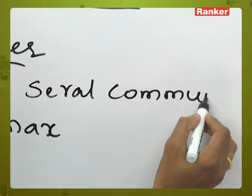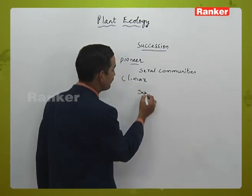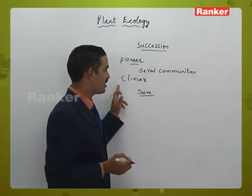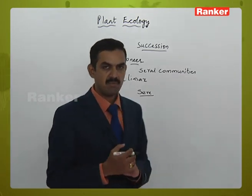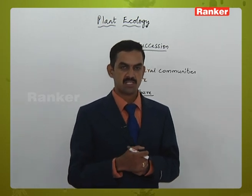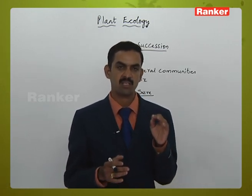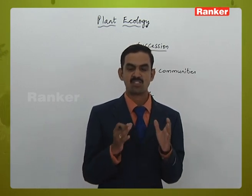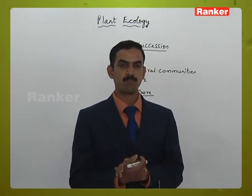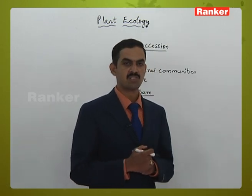Each intermediate community is called a sere. From the pioneer community to the climax community, many seral communities come in the process. There are two types of succession: primary and secondary. Primary succession occurs when a bare land or bare rock is occupied by a new group of plant community. That area is not initially suitable for plant growth, which is why the process of primary succession is very slow.